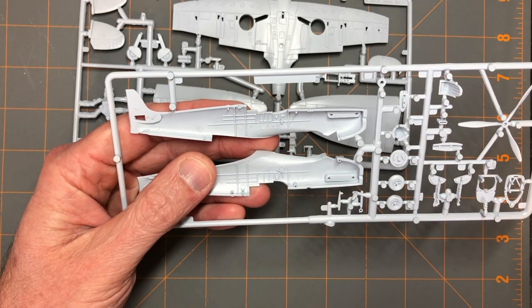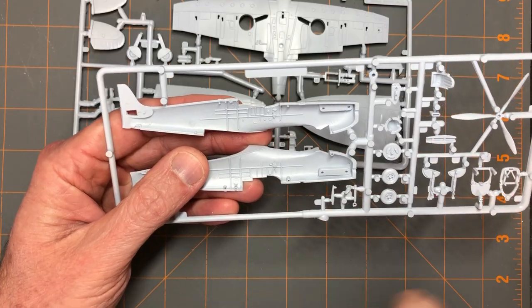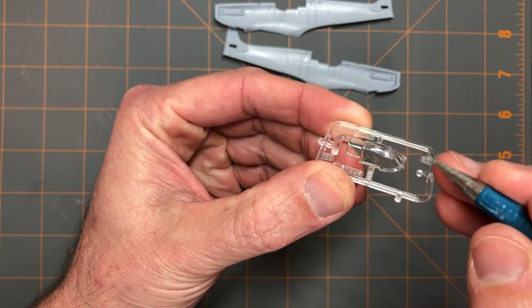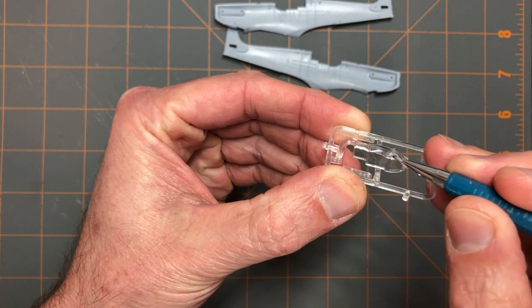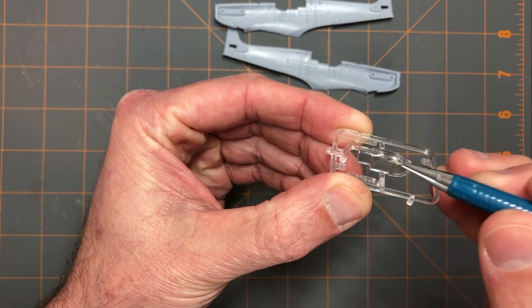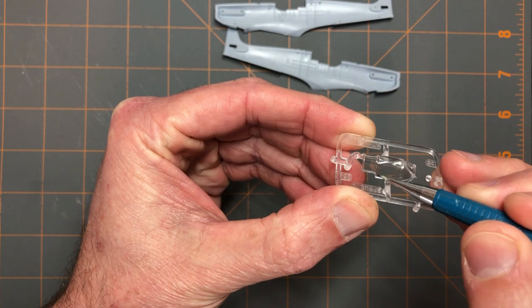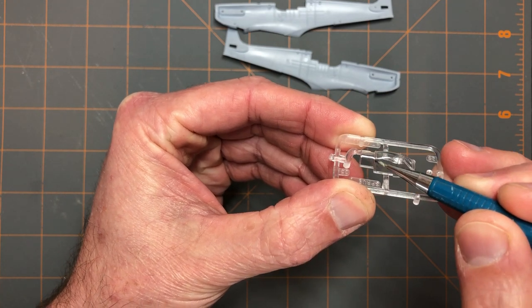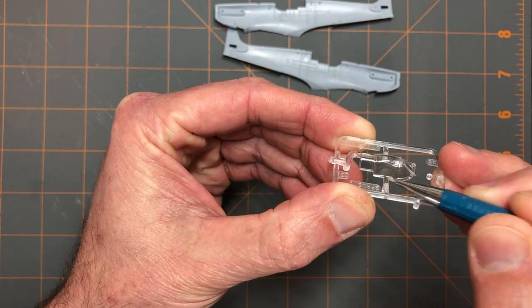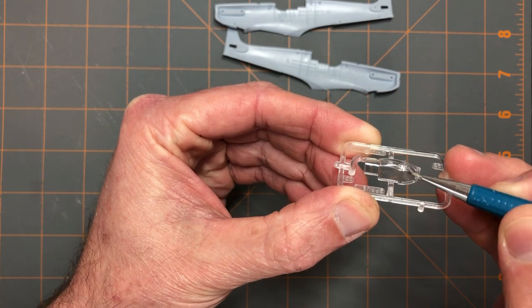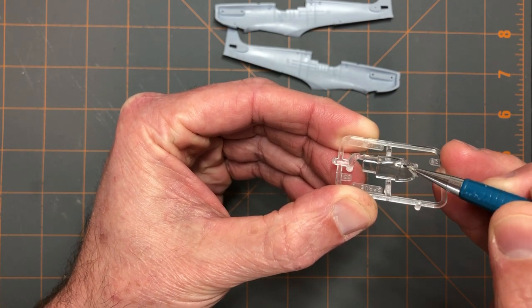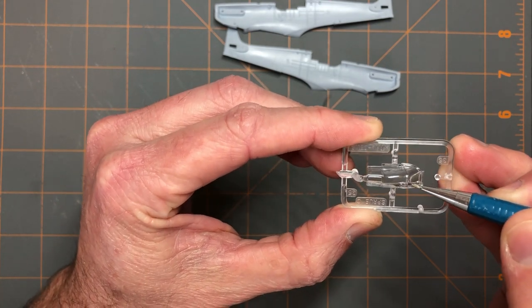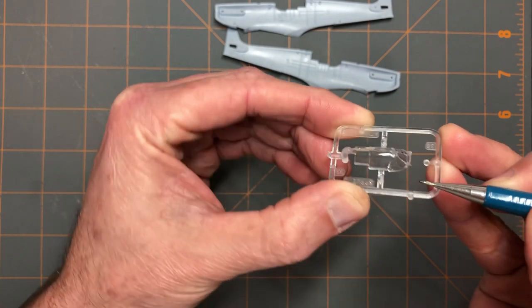A tricky part to rework in this one-piece canopy is separating the windscreen from the main canopy and the rear canopy section from the main canopy section, while still trying to preserve the canopy frame lines. I'll try to use a razor saw to separate it, and if that doesn't work out, I may have to add back in some of the canopy frame.